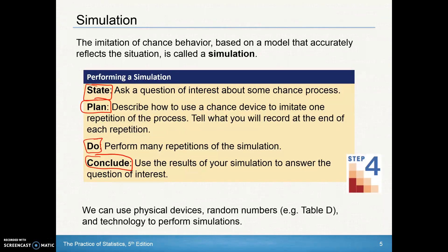For example, I might ask a question of interest about some chance process. I might say that a family plans to have five children. How can I use a chance device to imitate one repetition of that process? I could use a coin, record heads as boys and tails as girls. Then I flip the coin five times and record the results — maybe I get three heads and two tails, which means three boys and two girls. That's a very basic simulation using a physical device.